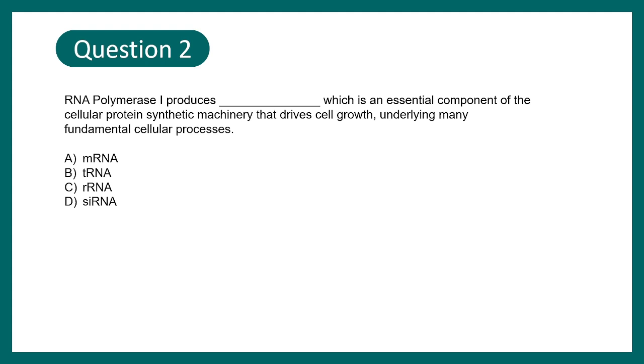Question number two. RNA polymerase 1 produces dash, which is essential component of the cellular protein synthetic machinery that drives cell growth, undergoing many fundamental cellular processes. The options are mRNA, tRNA, rRNA, or siRNA. You just need to know what are the RNA-Pol1 transcripts. And RNA-Pol1 transcripts are rRNA.